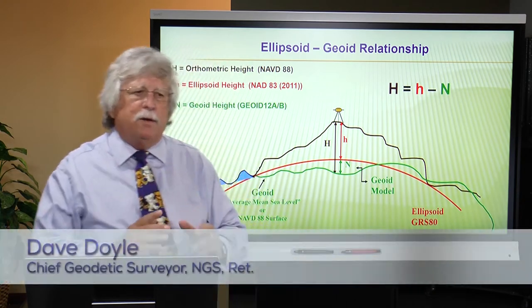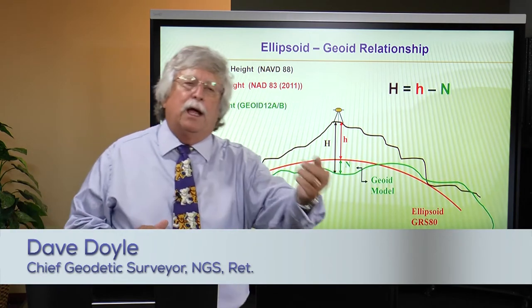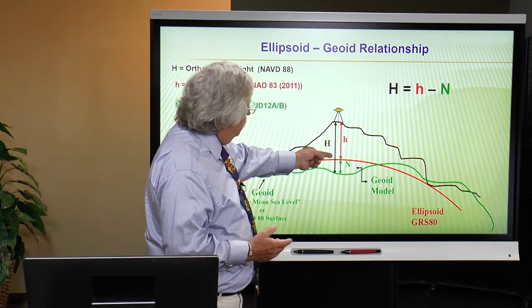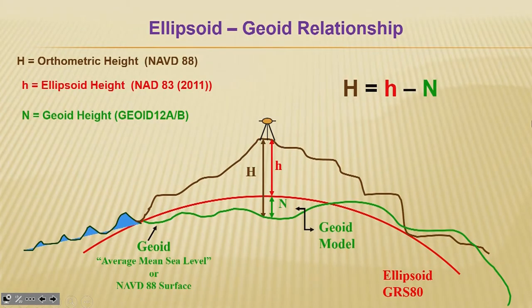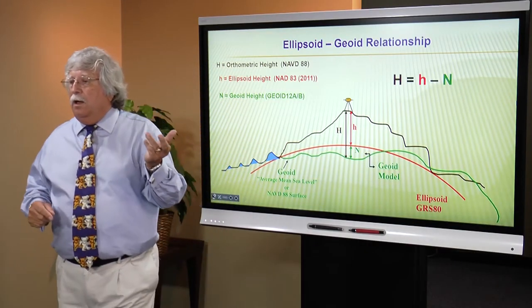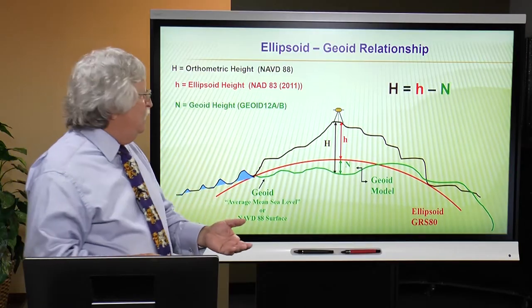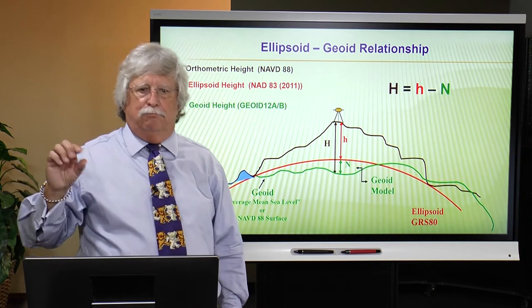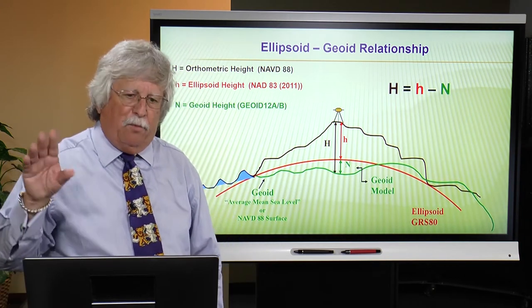What you get from that process is little h — your ellipsoid height — defined relative to the most contemporary definition of the geometric datum, NAD83 adjustment of 2011. The rest is big N — the geoid height or geoid separation. The current geoid model used for the United States is called Geoid12A or Geoid12B. Geoid12A and Geoid12B are identical except in Puerto Rico, where 12B helps deal with a small problem.